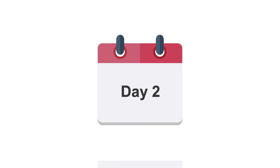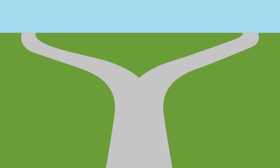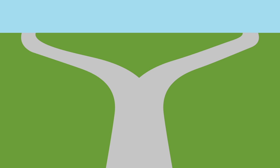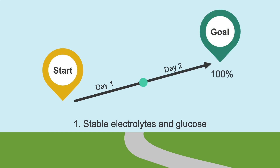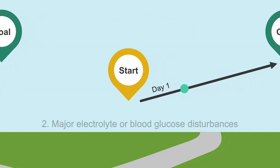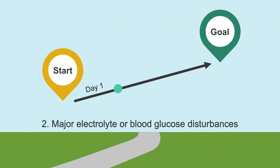After day one, your patient's TPN advancement trajectory will go one of two ways. The first way is if your patient's electrolytes and blood glucose are stable on day two — in this case, you can advance dextrose to goal, meaning your patient will be receiving 100% of their goal macronutrients. The second way is if your patient shows any major electrolyte or blood glucose disturbances — in this case, you'll want to work on correcting those prior to advancing the dextrose, and slowly advance TPN to goal as they are corrected.